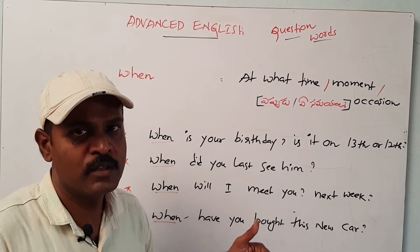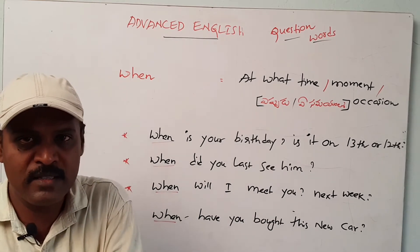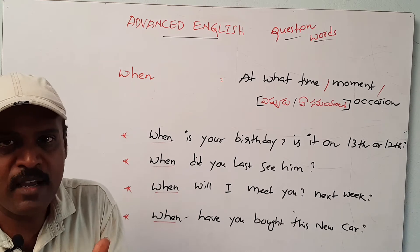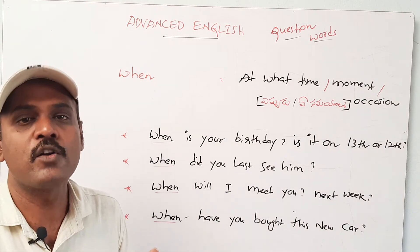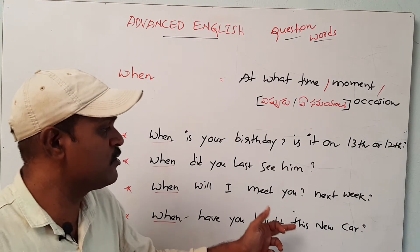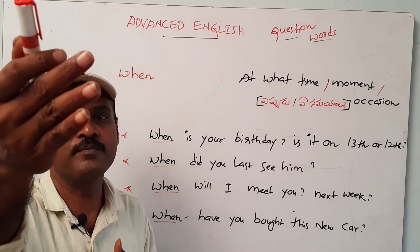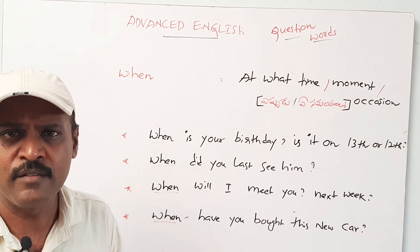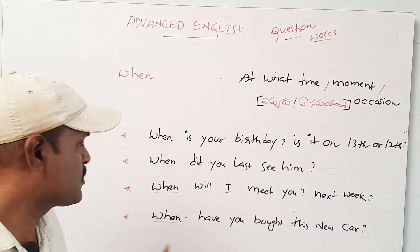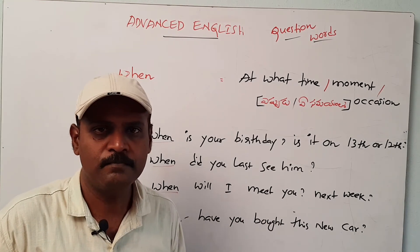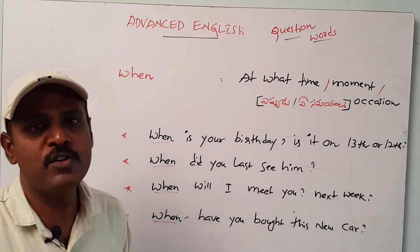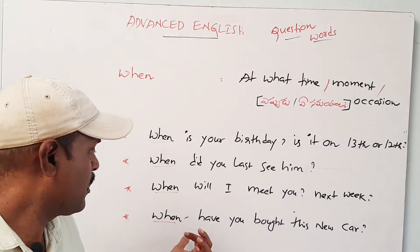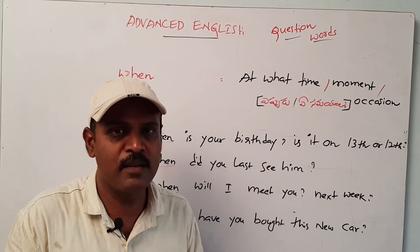'When did you last see him?' — it is a past action. When did you last see him means when did you meet him last? At what time before did you meet him? Did you talk to him? Next: 'When will I meet you?' — next week? — it is a future action. When are you free? At that point of time I will meet you. Next: 'When have you bought this new car?' — he is asking for the exact time when the car was bought.